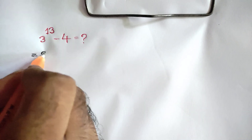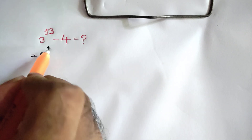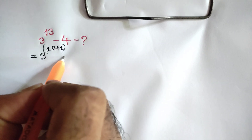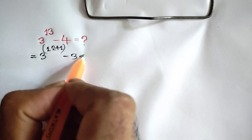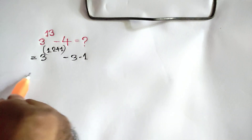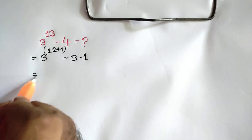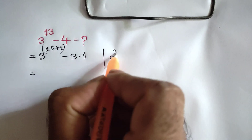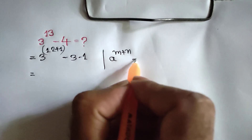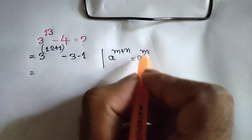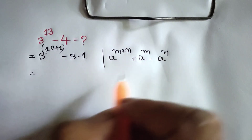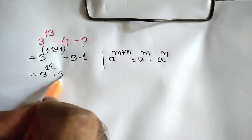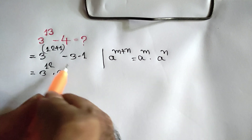3 to the power 13 can be written as 12 plus 1, and minus 4 can be written as minus 3 minus 1. Now we know that a to the power m plus n is equal to a to the power m times a to the power n. So we can write here 3 to the power 12 times 3 to the power 1, which is the same as 3.